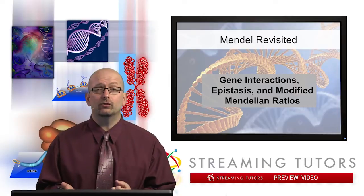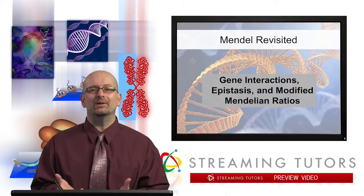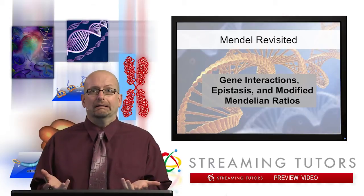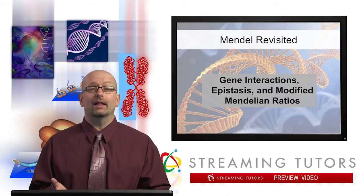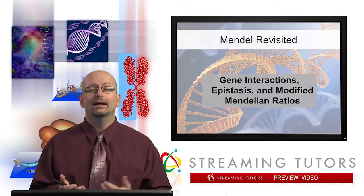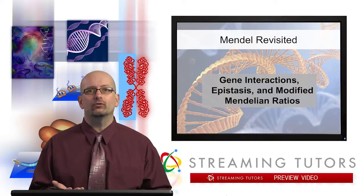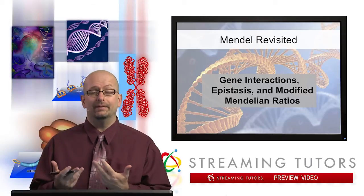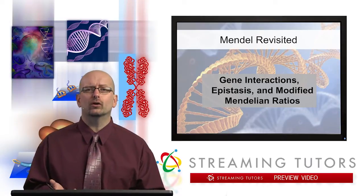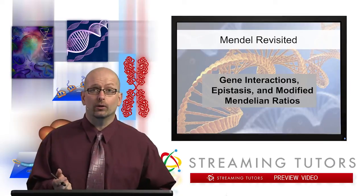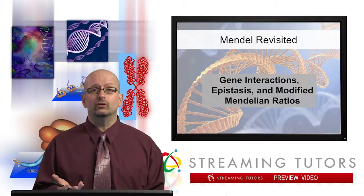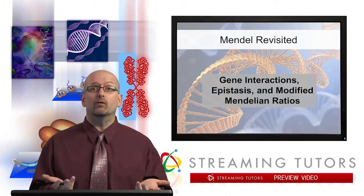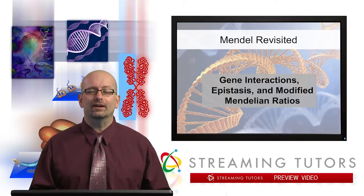Sometimes when you do crosses, you come up with ratios that look on the face of them nothing like they should if Mendel was correct. And we ask ourselves the question: does this invalidate Mendel's rules in these organisms or under these circumstances? Or is there another way we can look at the whole thing so that it falls into the Mendelian scheme of things? And it's always true that it falls into the Mendelian scheme of things one way or another.